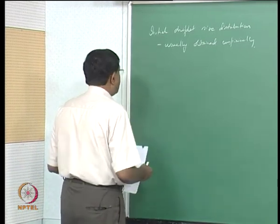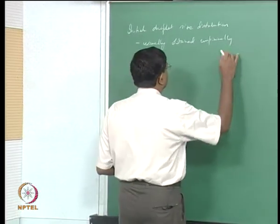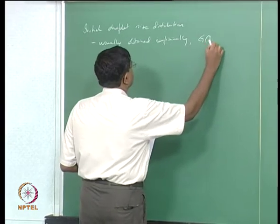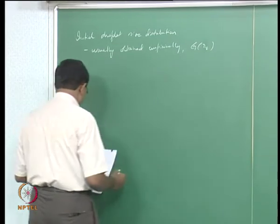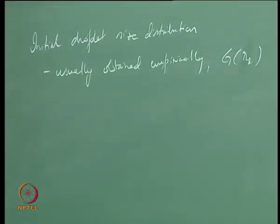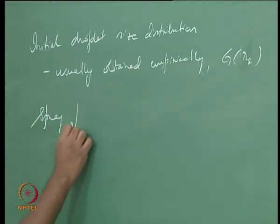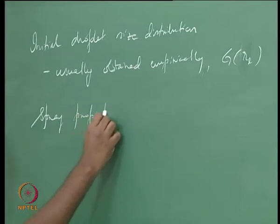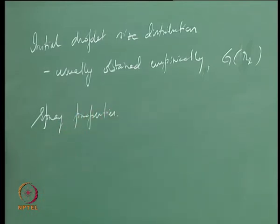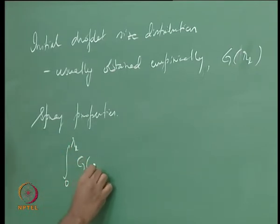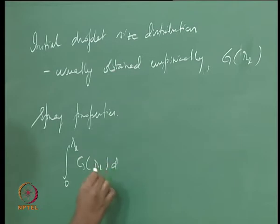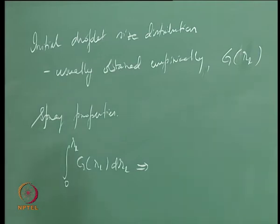Using a distribution function g(R_L), we should be able to obtain several spray properties. The spray properties are based on the droplet size distribution: the integral from 0 to R_L of g(R_L) dR_L gives the total number of droplets of radii less than R_L.